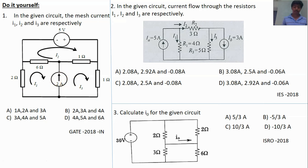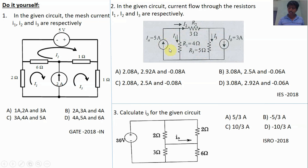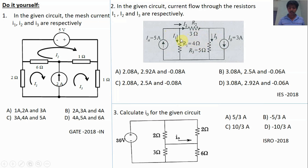Question 2 is from Engineering Service Examination 2018, Electrical. The objective is to find branch currents I1, I2, I3. Assign loop currents Ia, Ib, Ic. We cannot apply KVL for the first and third loops because of the current sources. Ia = 5A and Ib = 3A from the current sources directly. Apply KVL for the inner loop to find Ic. Then: I1 = Ia - Ic, the middle branch current equals Ic, and I3 = Ic - Ib.